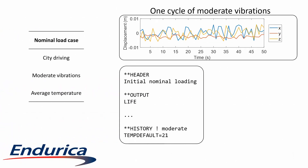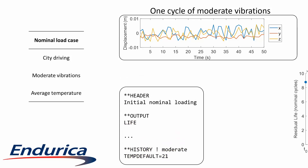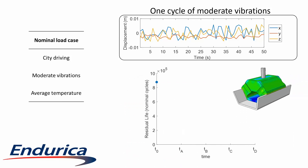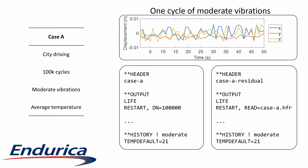First, let's compute the life of the transmission mount subjected to the nominal history that will be used for the residual life analyses. The moderate vibrations at average temperature will be used as the nominal history. This analysis uses Endurica CL to integrate from time 0 until end of life. After the analysis, we see that this mount initially has a life of almost 900,000 cycles of the nominal history.